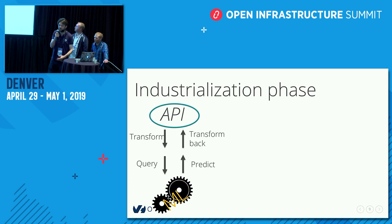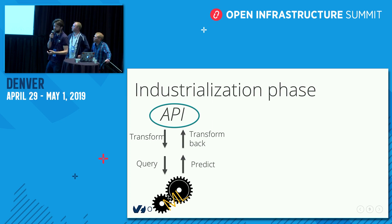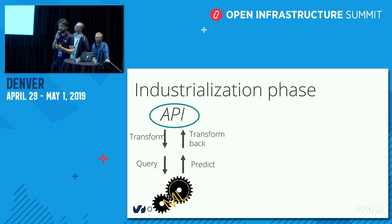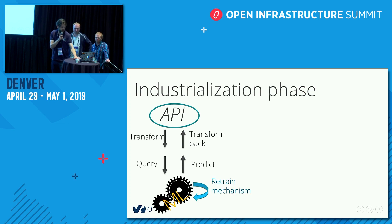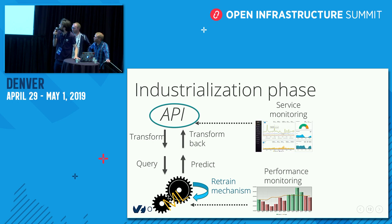The API transforms the data so we can query the model, the model makes a prediction, and the data is transformed back so the user can understand the prediction. But that's not all — this is a minimal instance. We may also want to refresh the data and retrain the model to take into account new data, so we add a retrain mechanism. In general, we also want to monitor the performance of the model to see if it doesn't drift, and like any application, monitor the service for uptime and quality of service.